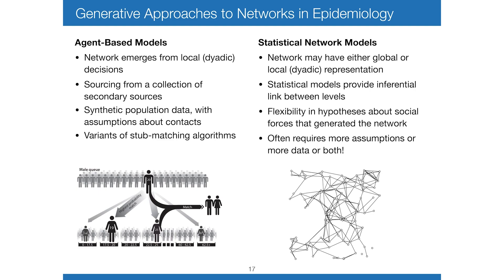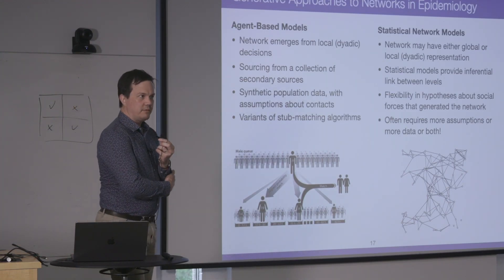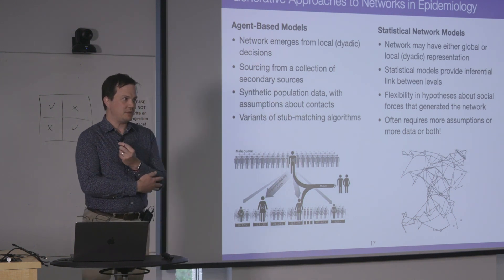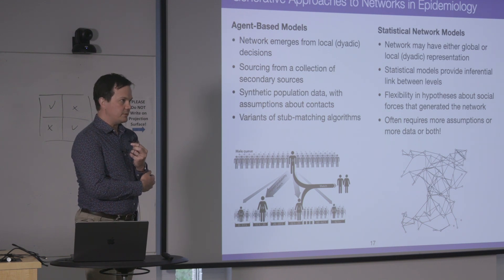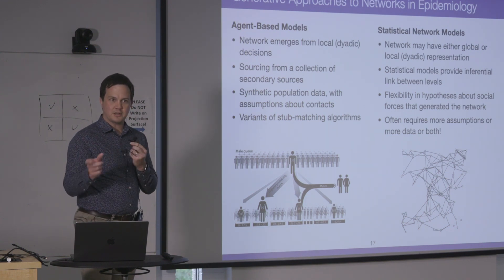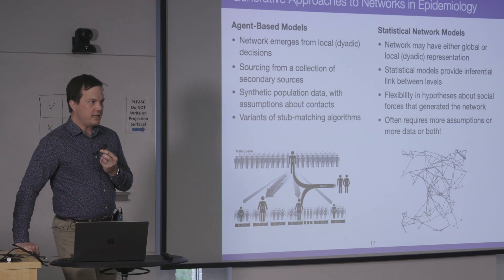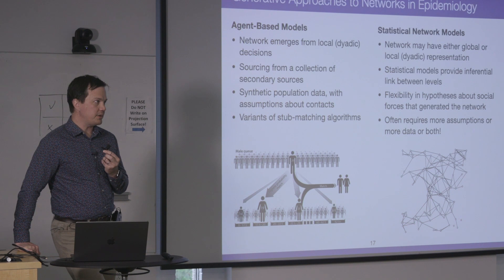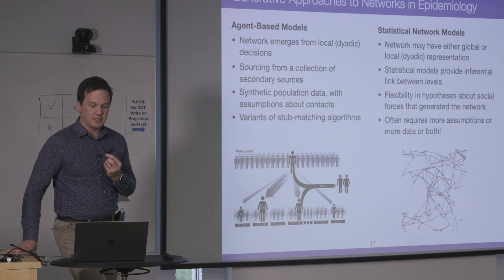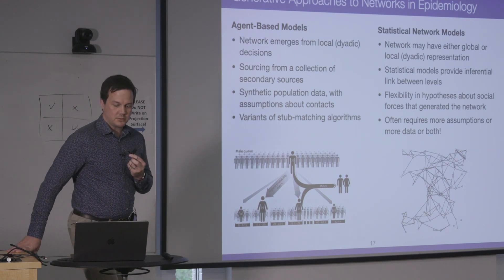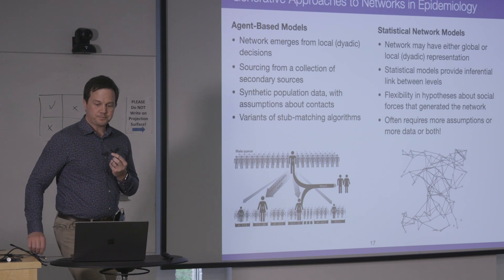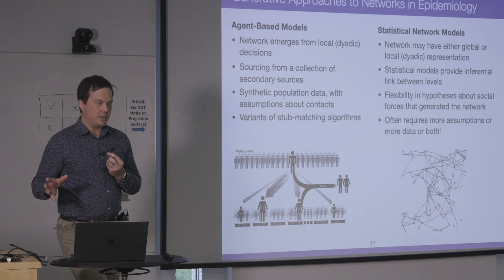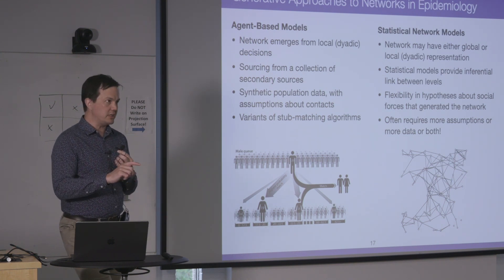I wanted to compare what's going on in terms of generating networks in epidemiology. There are many instances of epidemic models called network models, but they're actually more agent-based models, and I want to draw a contrast. Many agent-based models generate the network as an emergent property from individual dyadic choices, using approaches like the stub-matching algorithm. In contrast, a statistical network model like an ERGM or TERGM has either a global or individual dyadic representation, with a regression model approach providing an inferential link between those levels.